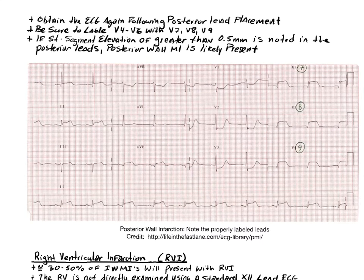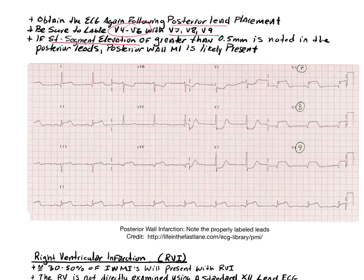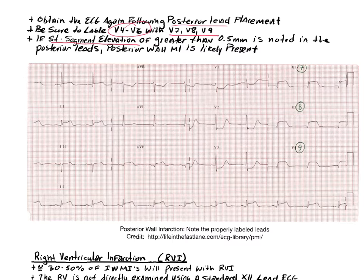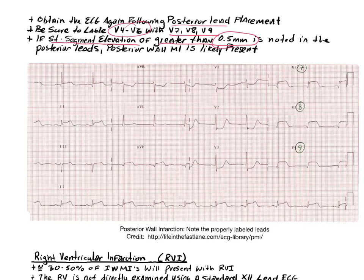When interpreting posterior leads, the ST elevation threshold is much lower than the typical STEMI threshold. Our usual criteria is 1 mm or more in two or more contiguous leads, or more than 2 mm in a single lead. For posterior leads, the threshold is greater than 0.5 millimeters — half a box — and that is evidence of a posterior wall myocardial infarction.